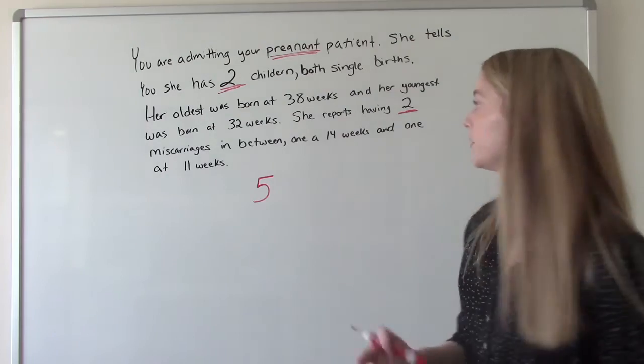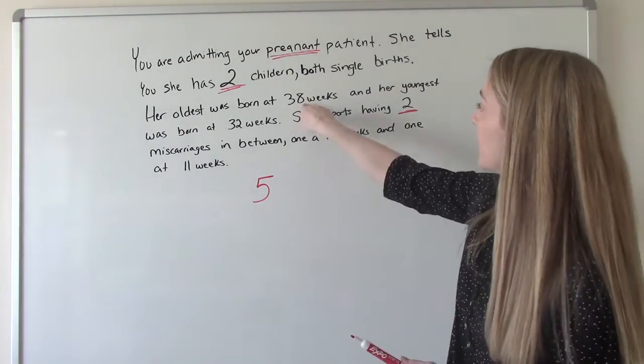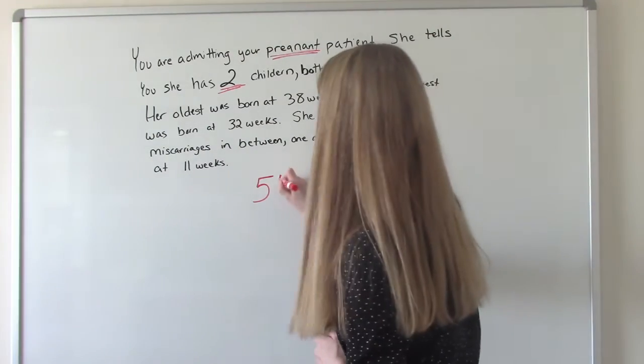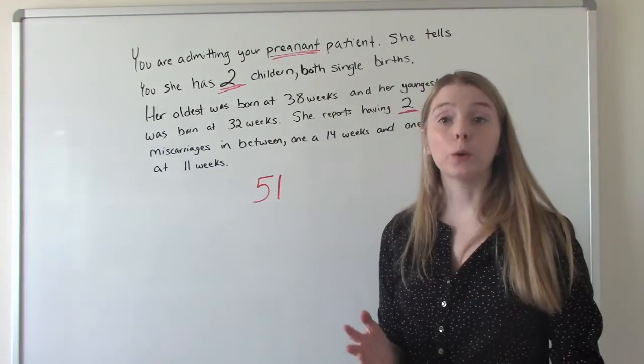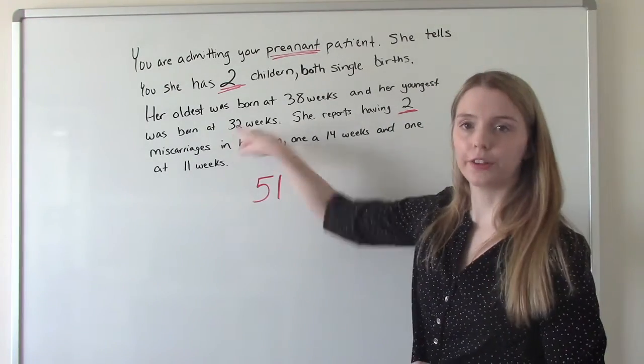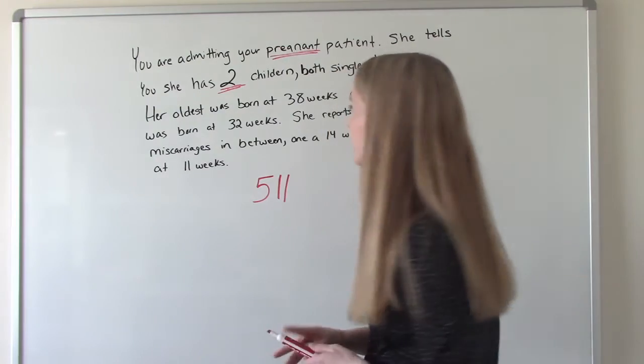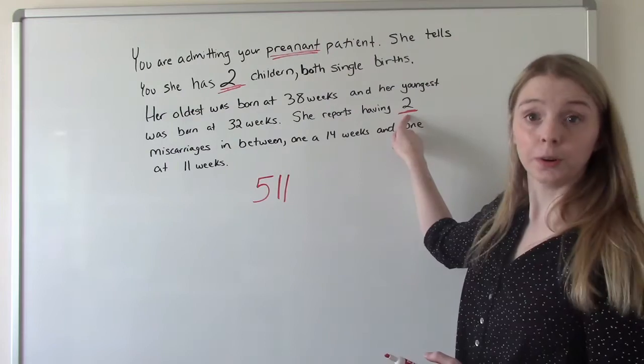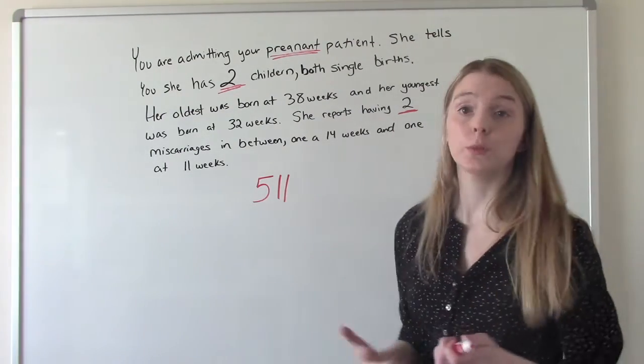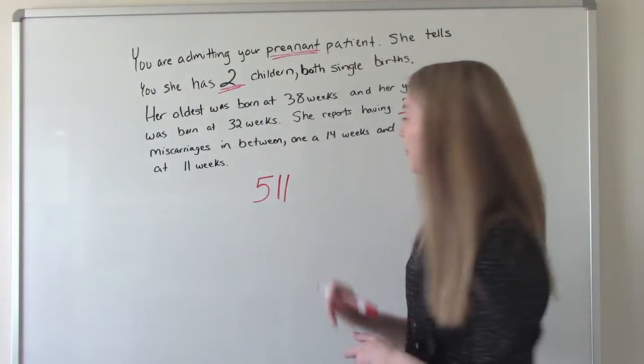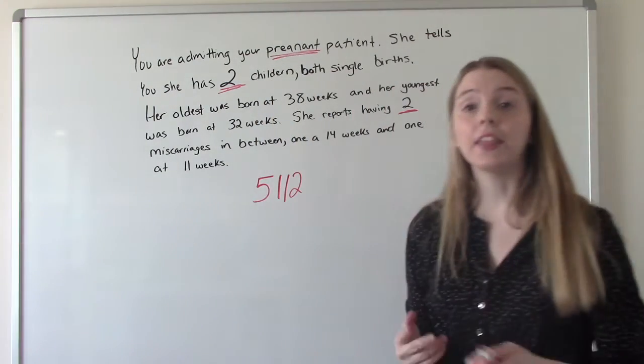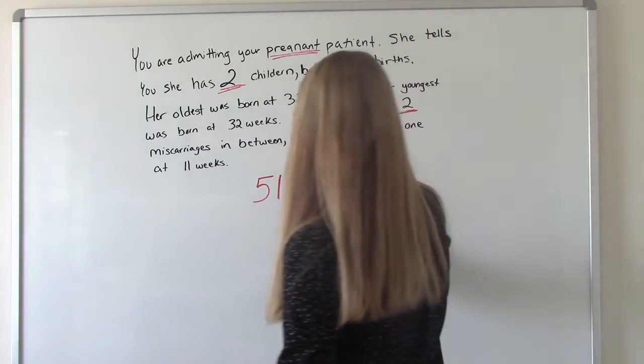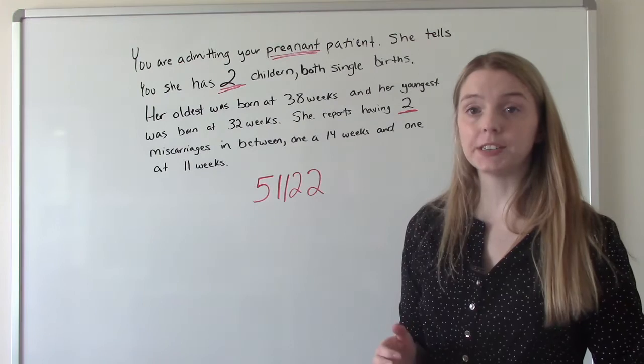So remember she's currently pregnant. She's had two children and then she's had two miscarriages. So two plus two plus one, that's five. So our G, our gravida, our number of pregnancies is five. How many of those were term deliveries? Well, she had the one at 38 weeks and one at 32 weeks. So just the one is a term. How many were preterm? Looks like the one, 32 weeks. How many abortions? So how many losses has she had? She says two because 14 weeks and 11 weeks, those are both less than 20 weeks. So this is a two. And then how many living children does she have? Two.